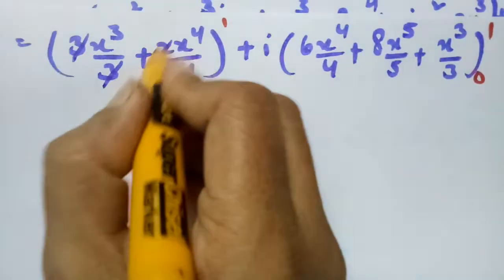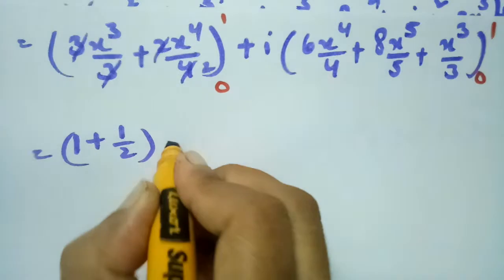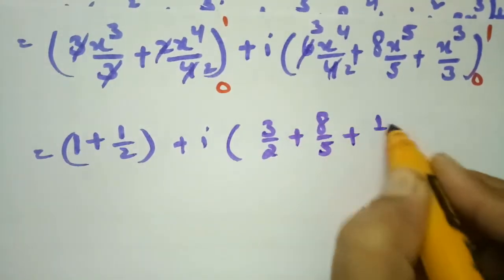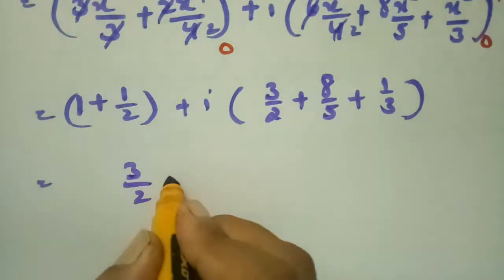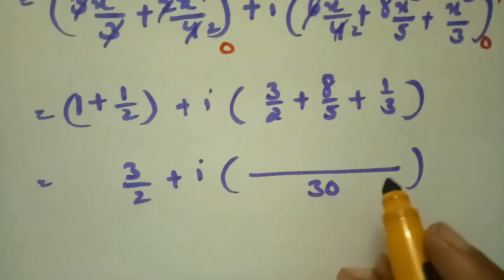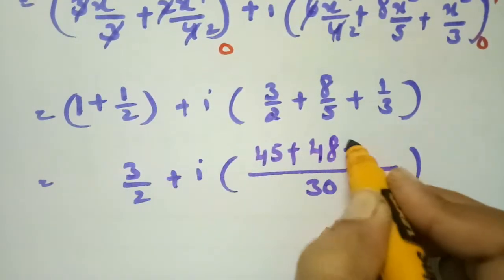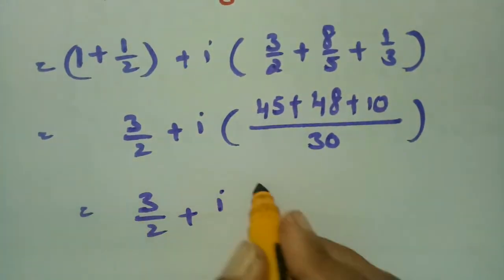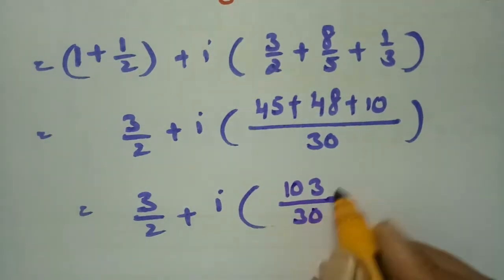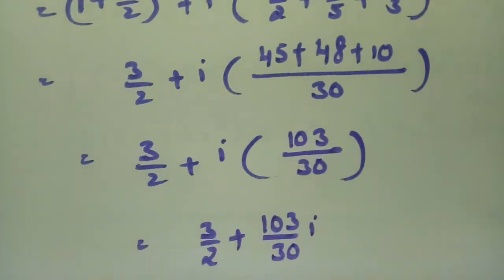Substituting the upper limit minus lower limit: the real part simplifies to 1 + 1/2 = 3/2. For the imaginary part, taking LCM of 30: we get (15 + ... + 48 + 10)/30. Adding up the terms gives 3/2 + (103/30)i — therefore our integral value is 3/2 + (103/30)i.